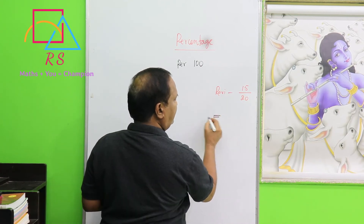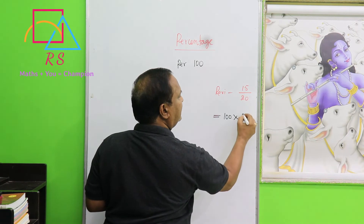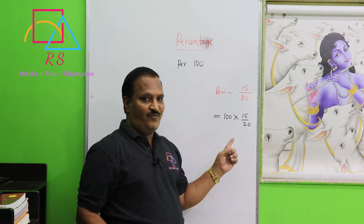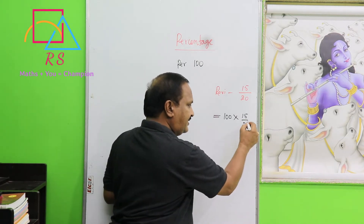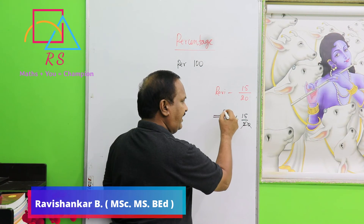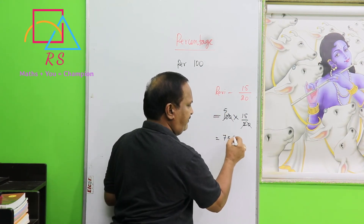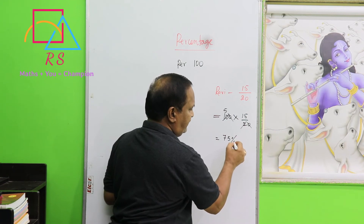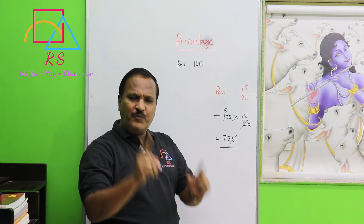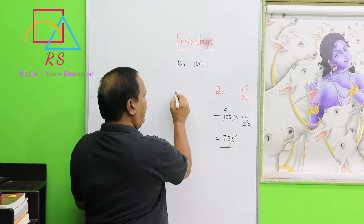So the other method: percentage of Ravi = 100 × 15 / 20. The zeros cancel, 2 goes into 10 five times, and 5 × 15 = 75, so 75 percent. This is another way — whenever you want to find out the percentage, you can use this formula directly.